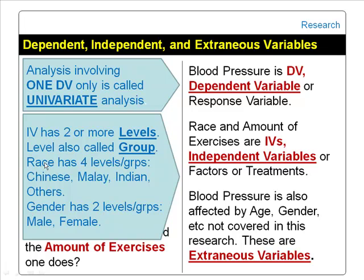For example, in the Singapore context, race has four levels or groups: Chinese, Malay, Indian, and others. Gender has two levels or groups: male and female.